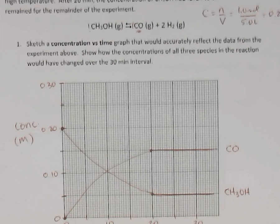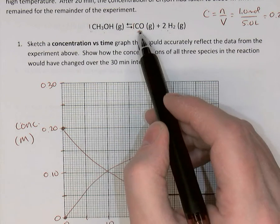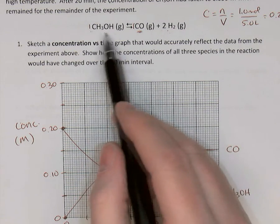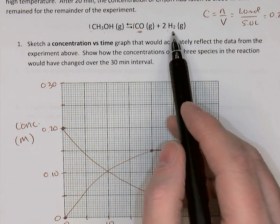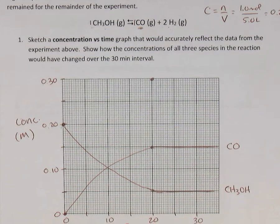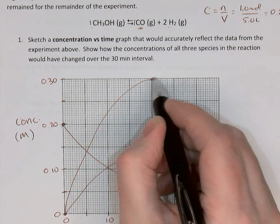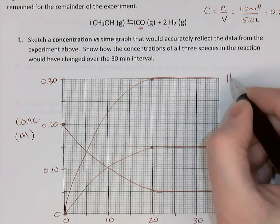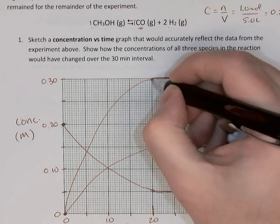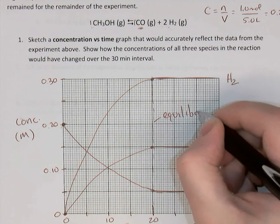For hydrogen, the balanced equation shows a coefficient of 2, so there's a 2-to-1 ratio. If methanol lost 0.15 molarity, hydrogen gains twice that amount. So hydrogen rises to 0.30 molarity at 20 minutes, where it plateaus. The hydrogen curve rises faster and reaches 0.30 molarity at the top of the graph. When the concentrations remain constant at 20 minutes, that is where equilibrium was reached.